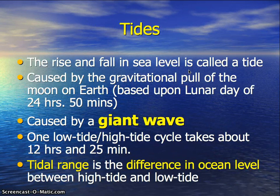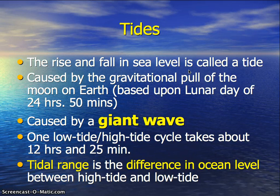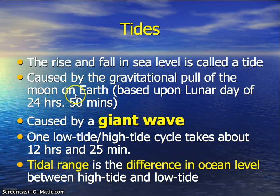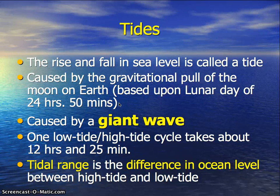Tides are the rise and fall of sea level on the planet, caused by the gravitational pull of the moon on Earth. Tides are based on the lunar day, which is 24 hours and 50 minutes — compared to the Earth day of 24 hours. So the lunar day is 50 minutes longer, which is why we don't get the tide at the same time every day. It shifts by 50 minutes, so if high tide is at 12 noon one day, the next day it'll be at 12:50.